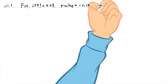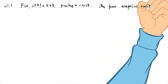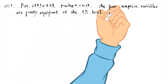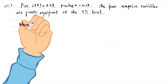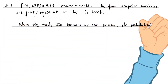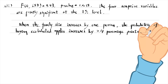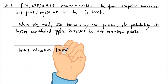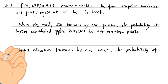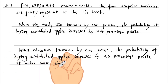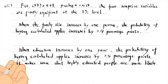For part 3, the F-statistic is 4.43 and its p-value is 0.0015. The four log price variables are jointly significant at the 1% level. When the family size increases by one person, the probability of buying equal-labeled apples increases by 2.4 percentage points. It is natural for larger families to consume more apples. When education increases by one more year, the probability of buying equal-labeled apples increases by 2.5 percentage points. It makes sense that highly educated people are more likely to buy environmentally-friendly products.